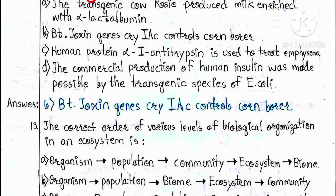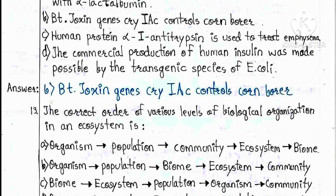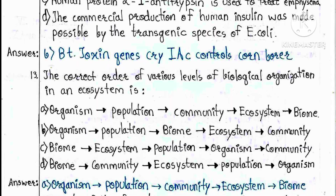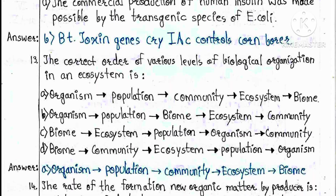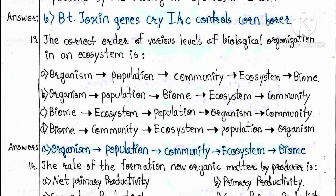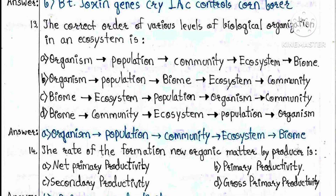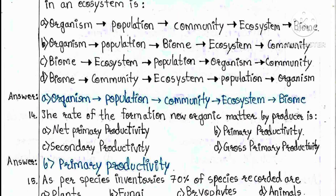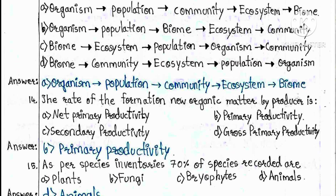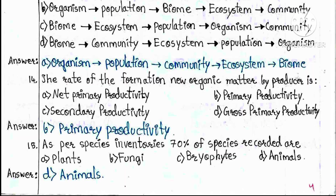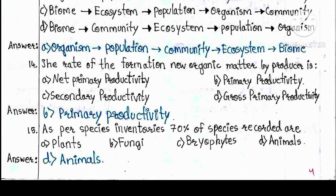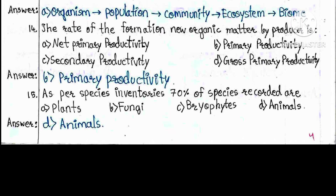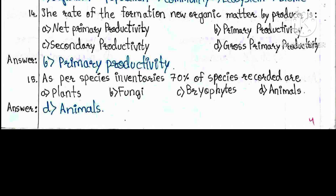Question 13: The correct order of various levels of biological organisation in an ecosystem is: A) Organism → Population → Community → Ecosystem → Biome, B) Organism → Population → Biome → Ecosystem → Community, C) Biome → Ecosystem → Population → Organism → Community, D) Biome → Community → Ecosystem → Population → Organism. The answer is A. Question 14: The rate of formation of new organic matter by producers is: A) Net primary productivity, B) Primary productivity, C) Secondary productivity, D) Gross primary productivity. The answer is B — primary productivity.